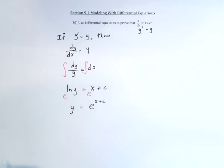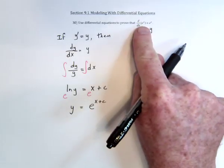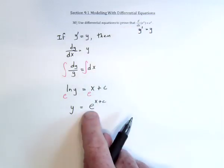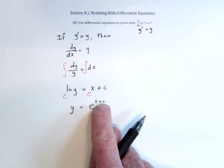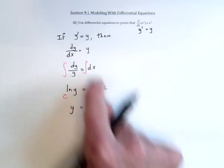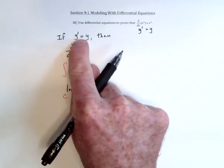And if c is equal to 0, this is true. Derivative of e to the x equals e to the x. So technically, we could have c as any constant, and it would also be a solution to this differential equation.